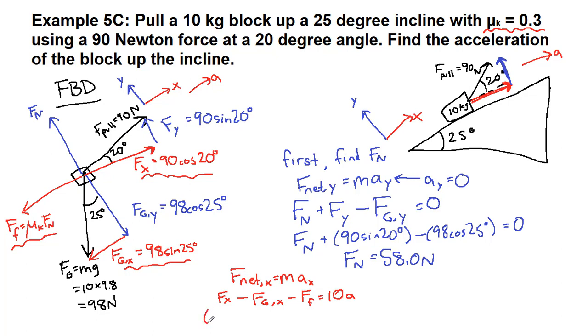So we can plug in what we've got here 90 cosine 20 degrees minus 98 sine 25 degrees minus so mu k given in the problem is 0.3. And the normal force we use right now is 58.0. And all of that is equal to 10 a.